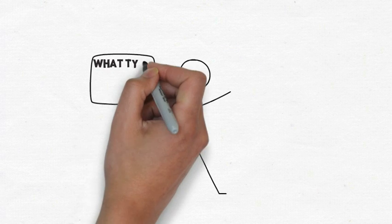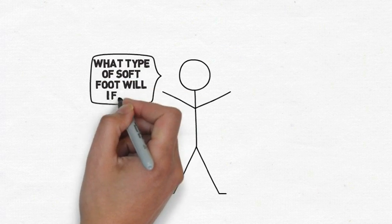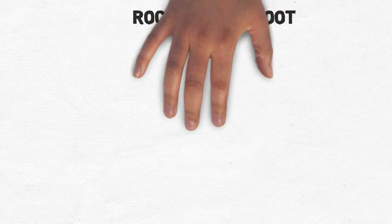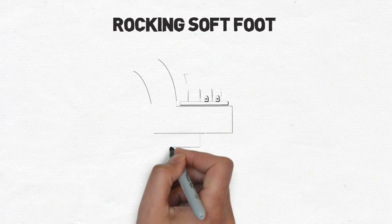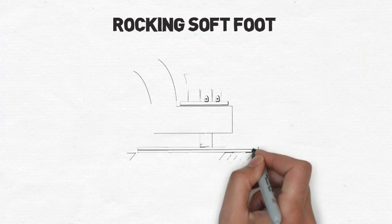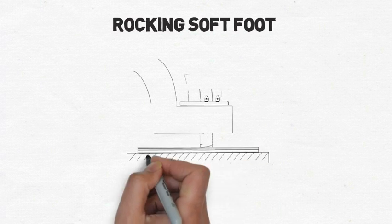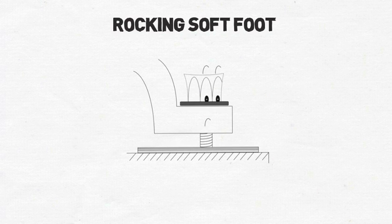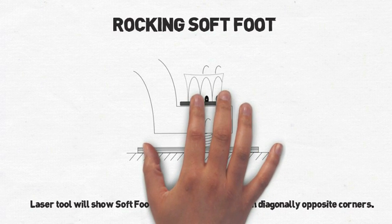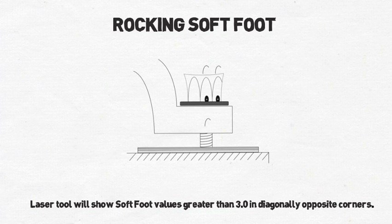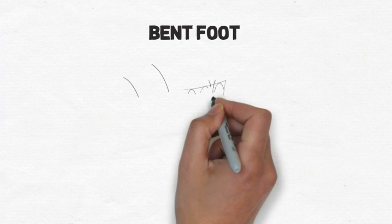So what type of soft foot will you find? With rocking soft foot, three feet may be co-planar and the fourth will not. The laser readings will show out of tolerance on diagonally opposite corners. A bent foot will have one corner or side of the foot touching the base, acting as a lever when bolted down.